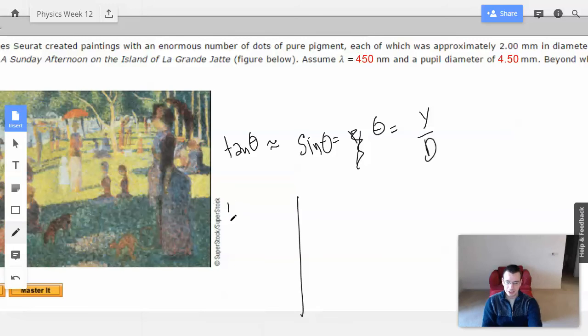This is for a single aperture, single slit. The distance between the center and the first minimum would be Y. And this distance here would be D, and this would be M for the number of minimums we're looking for, times lambda, which is the wavelength, divided by A, which is the aperture.